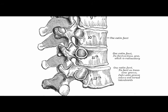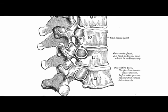T10 may resemble an atypical nature of T11 and T12. When that is the case, T9 lacks an inferior demifacet, as it would not be needed for articulation with the 10th rib.